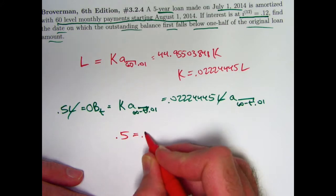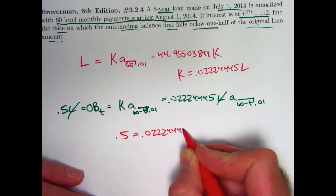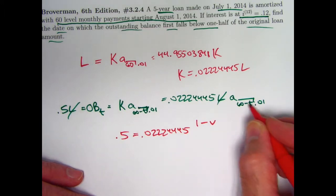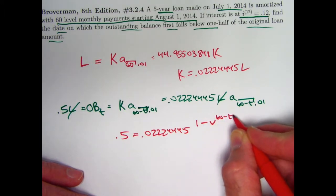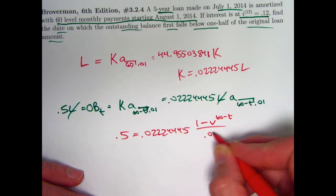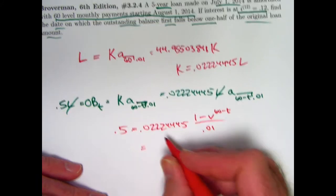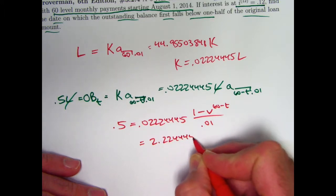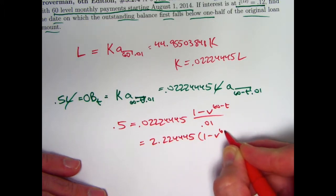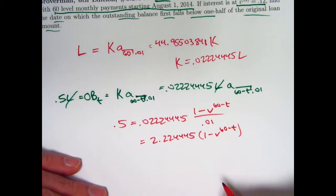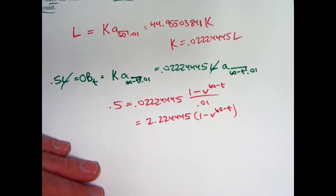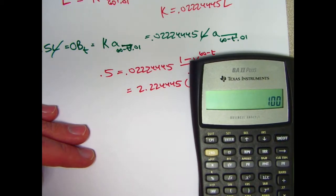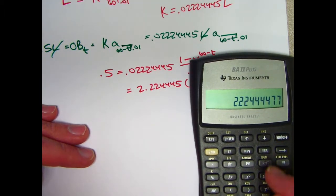0.5 will be 0.022244445. Think about the formula for A. It's 1 minus V to this power, 60 minus T power, divided by that number, 0.01. This divided by 0.01 is going to be 2.22244445. Now divide both sides by that. There it is. Divide both sides by that.